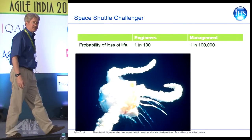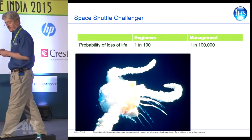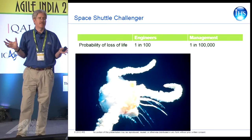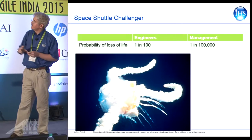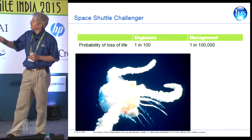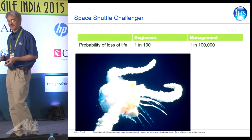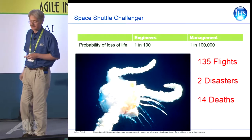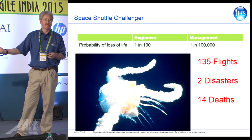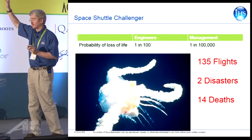Let's take a look at the Space Shuttle Challenger. When the Space Shuttle blew up, they did a real detailed analysis — they went back and looked at what probability of loss of life they had from the program. The engineers said there was about a 1 in 100 chance of loss of life. Management said 1 in 100,000. Now what really happened? 135 flights, 2 disasters, 14 deaths. What does it tell you? Engineers are optimists. And management is somewhere in outer space.